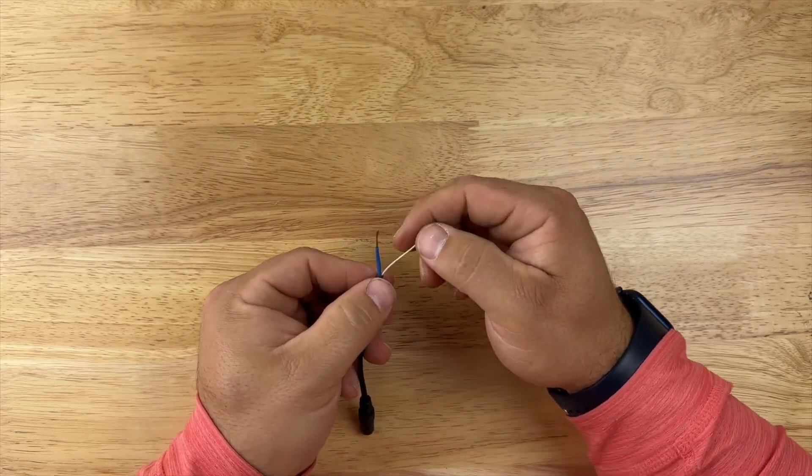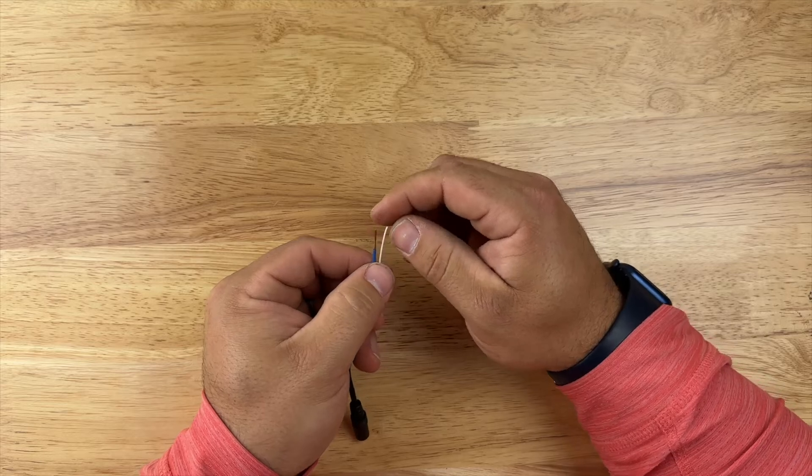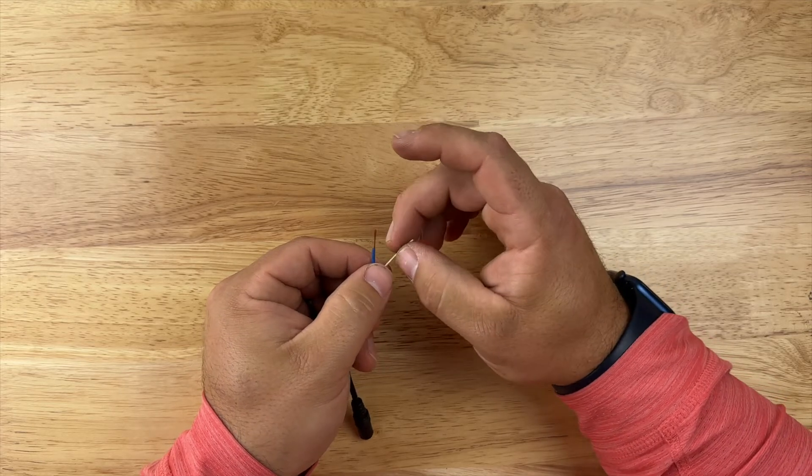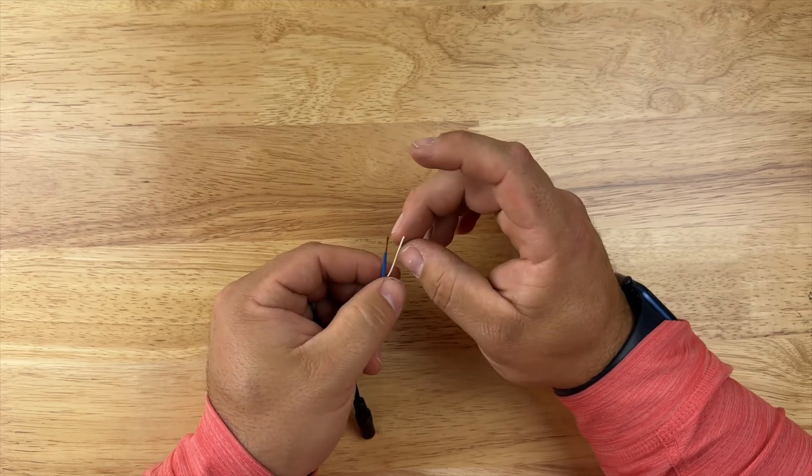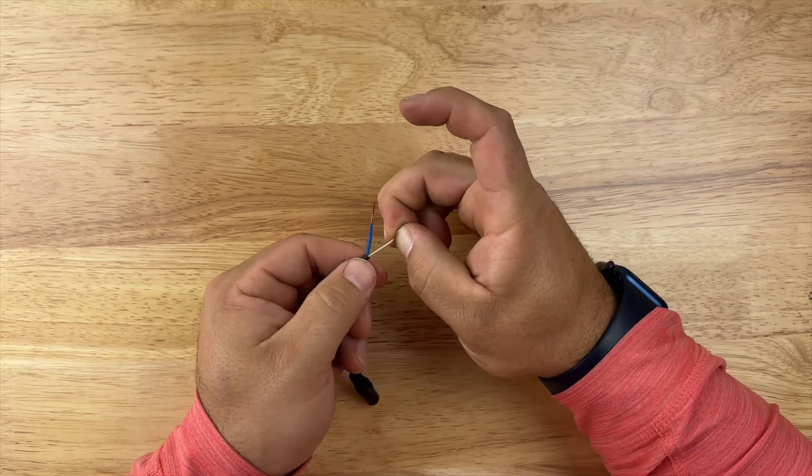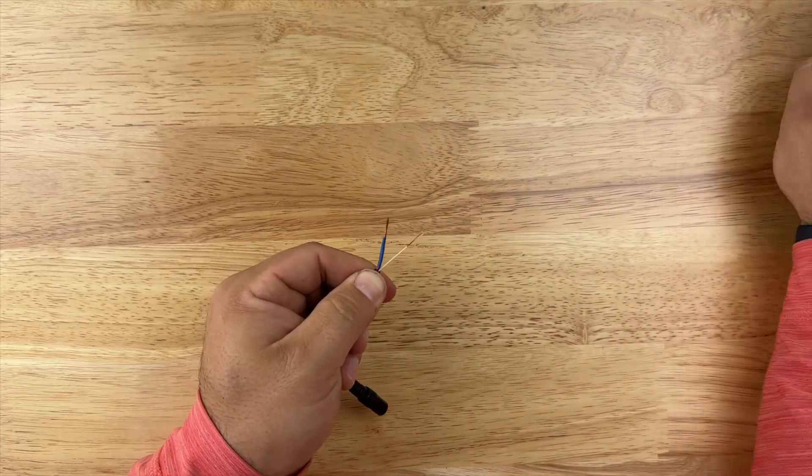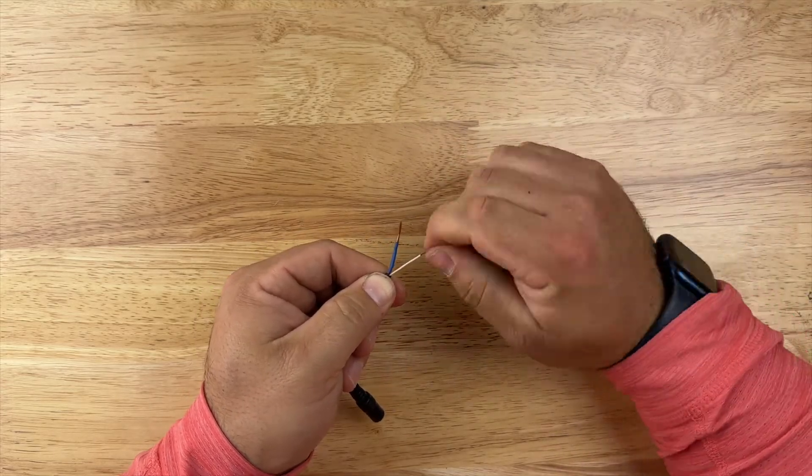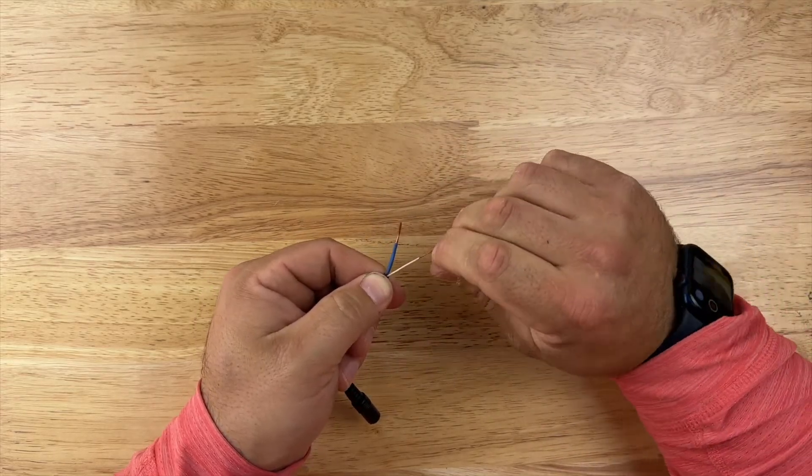Now I need to remove the casing on this white wire. It's a good idea to remove the same amount as your other wire. It just makes things a little easier. So I'm just going to pinch like I did the last one, pinch that casing and pull off. I'll twist these together and make sure that all those wires are tight.